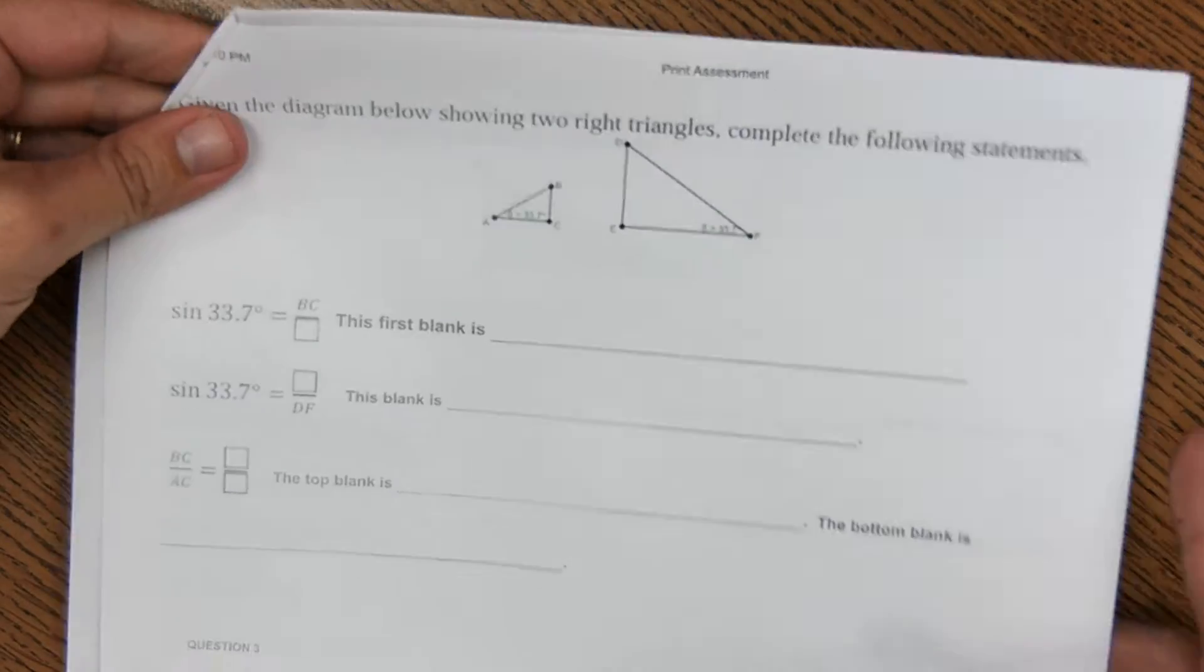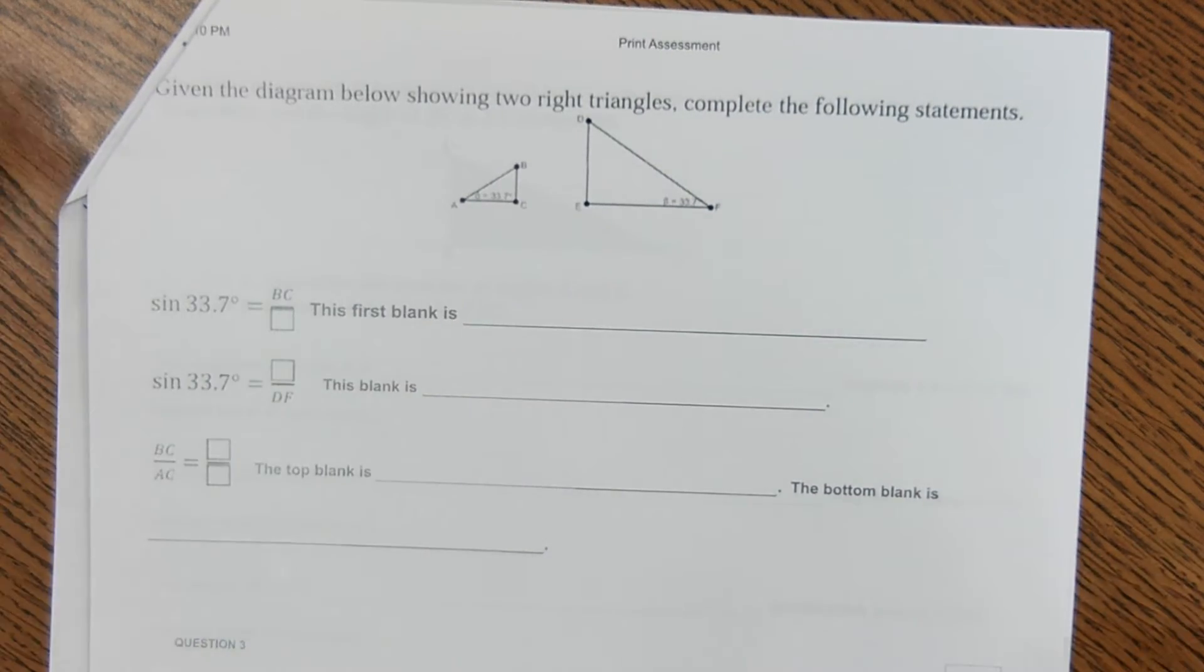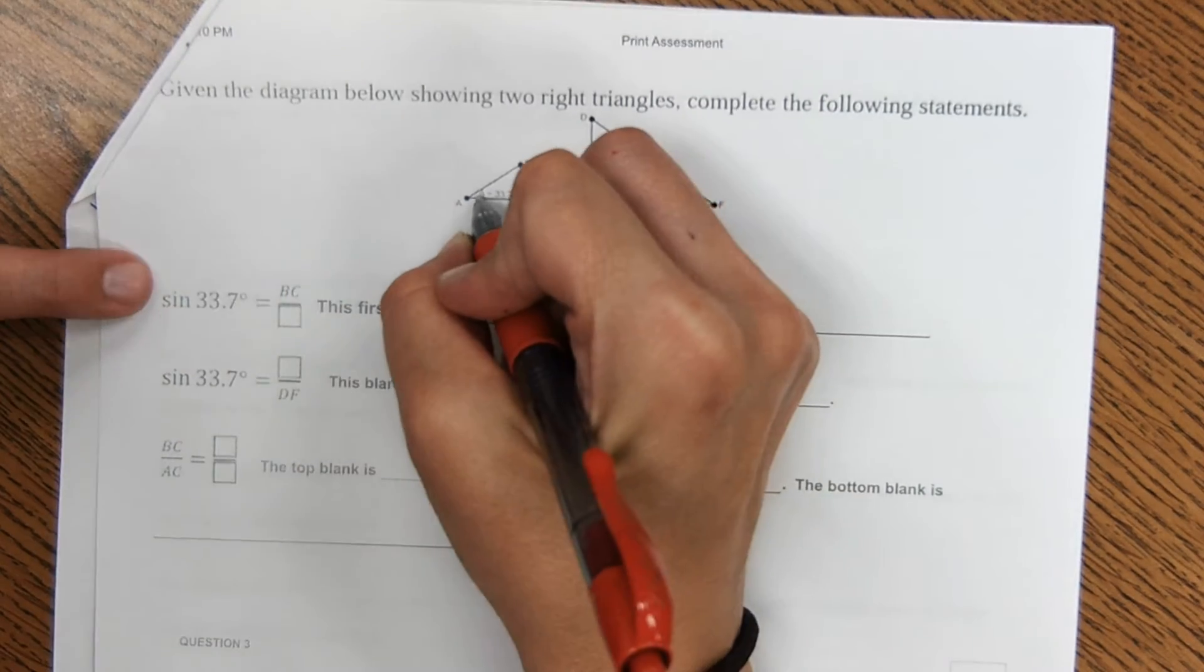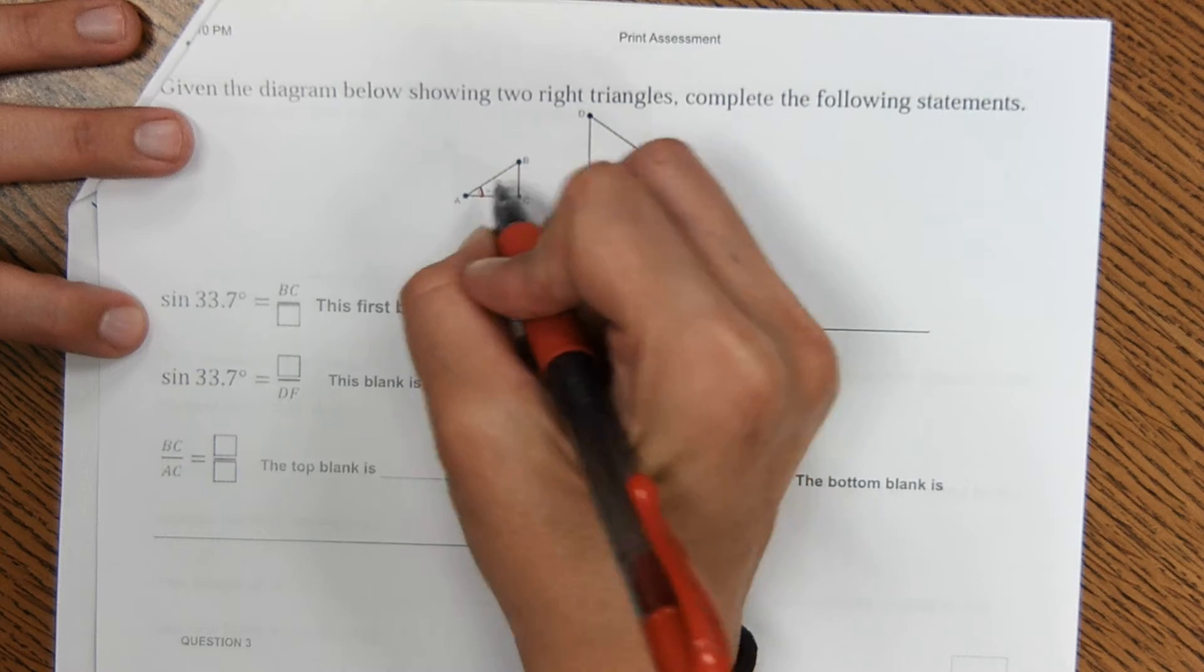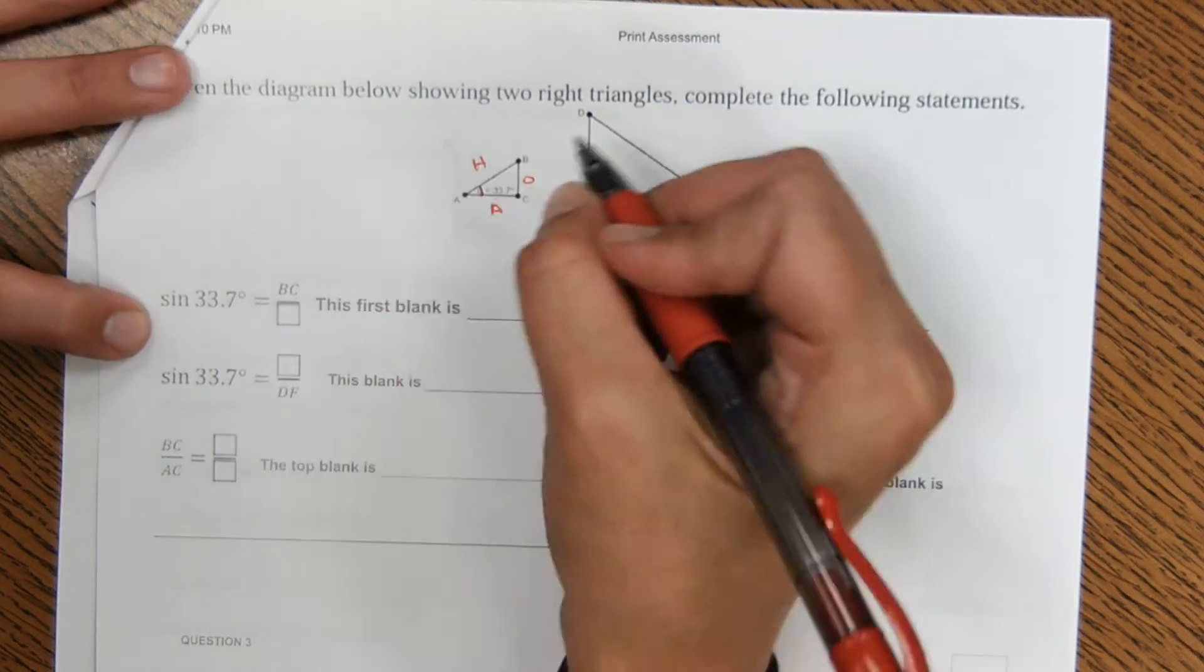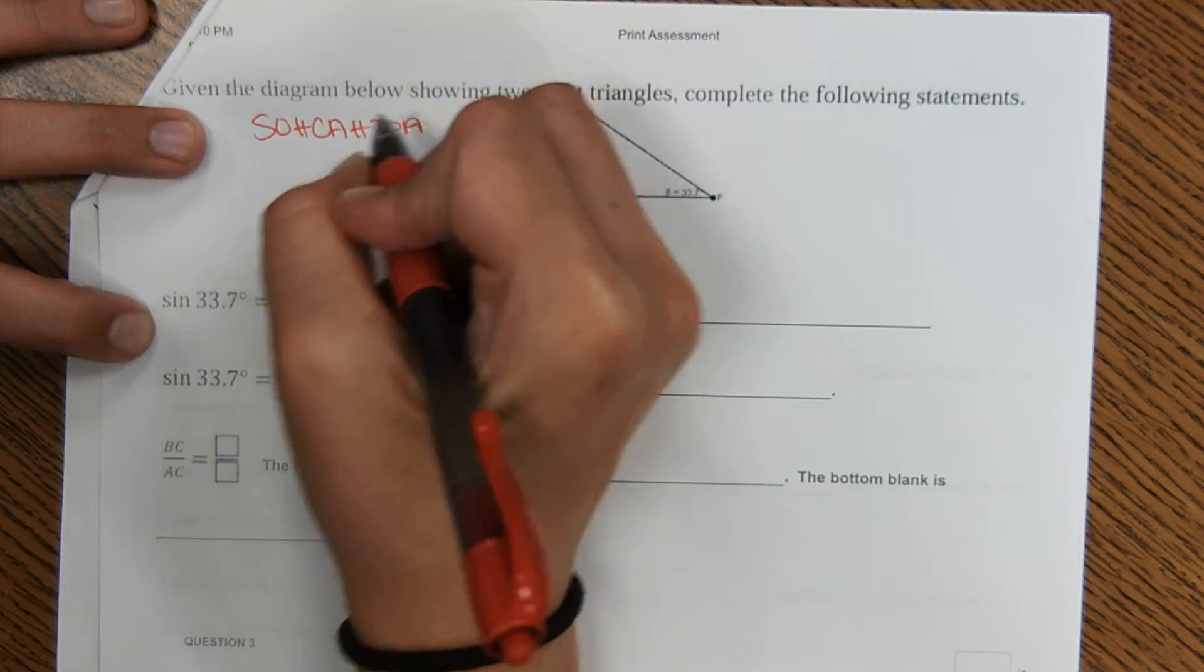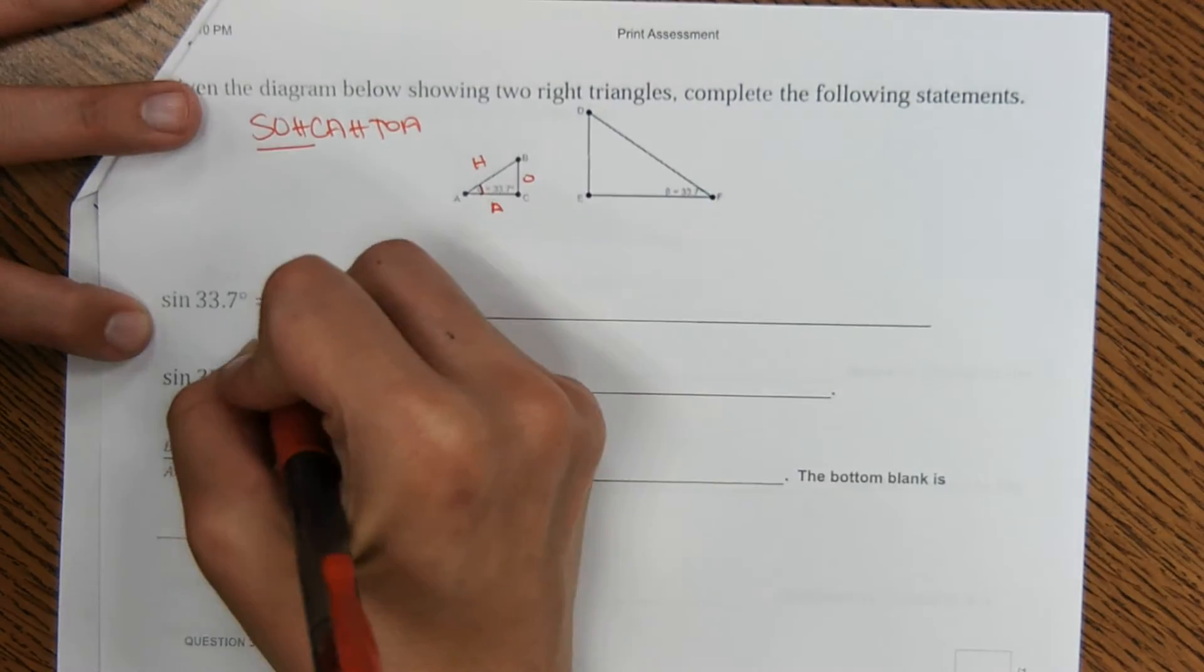Okay, given the diagram below, showing two right triangles, complete the following statements. Sine of 33.7 is BC over what? Well, of this angle, opposite hypotenuse, adjacent. So SOHCAHTOA, sine is opposite over hypotenuse, so BC would be over BA.